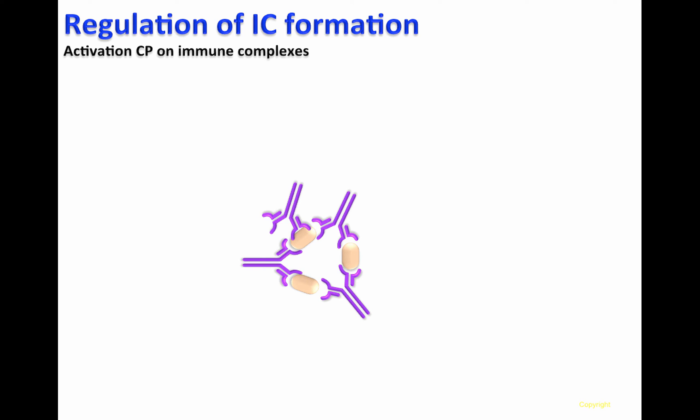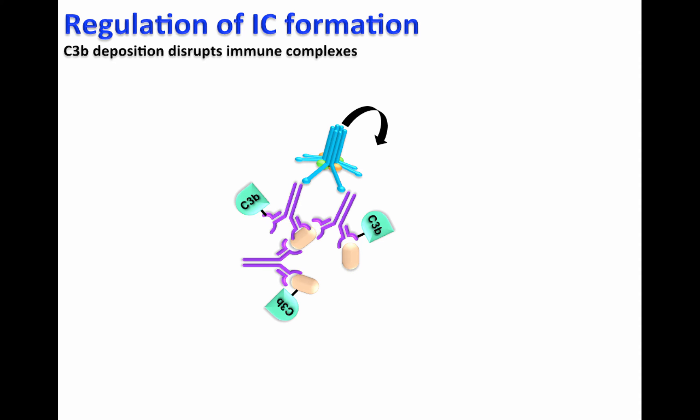Regulation of immune complex formation. Immune complexes activate the classical pathway, here represented by the binding of C1. The C1 complex will bind, leading to the activation of the classical pathway and deposition of C3B. Previous videos show how this process takes place in detail. Since C3B can occur in several places on immune complexes, it is possible that C3B is deposited in the same place where antibodies are recognizing the antigen. If this happens, the antibodies can no longer bind to the antigen.